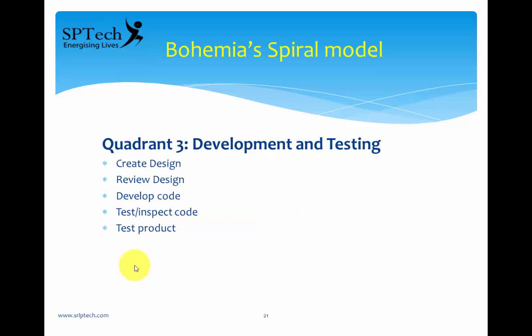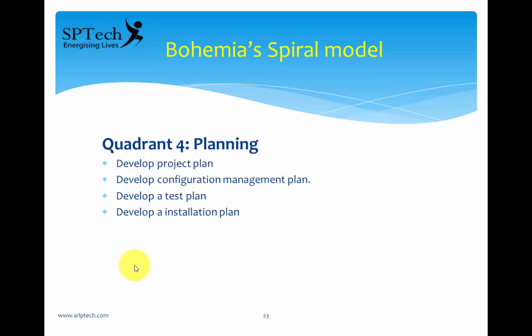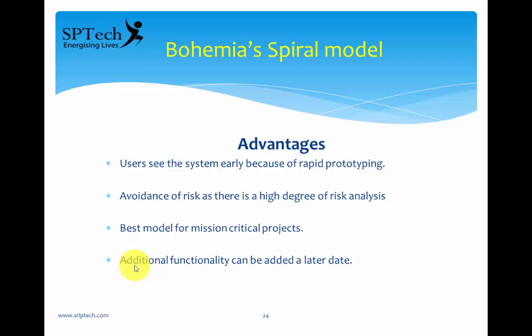In quadrant three, you are involved in creating the design, reviewing the design, developing the code, inspecting the code, and finally testing the product — the majority of operations happen here. In quadrant four, you plan: how many resources are needed, how to test the software, how to install it at the customer's place (the installation plan), and how to manage future requirement changes — that is called the configuration management plan. All four quadrants have certain sets of activities focused on the overall development of the software.